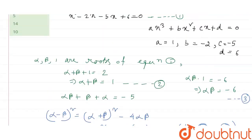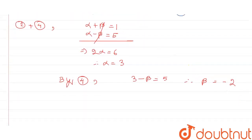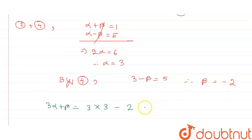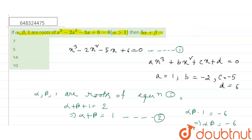Now we find the value of 3·alpha + beta. We write 3·alpha + beta = 3×3 + (-2) = 9 - 2 = 7. So we get 3·alpha + beta = 7. The correct option is 7.